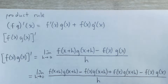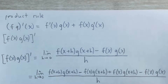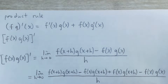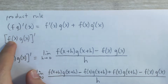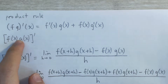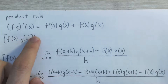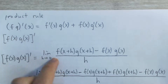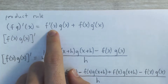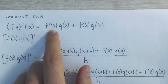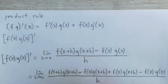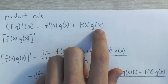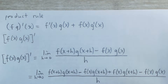Here we're going to prove the product rule for derivatives, which says that the derivative of a product of two functions, f times g of x — in other words, f of x times g of x — and then take the derivative of that, is equal to the derivative of the first function times the second function, plus the first function times the derivative of the second function.